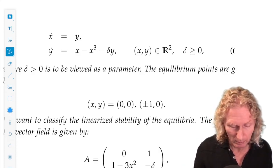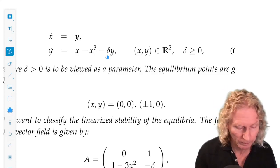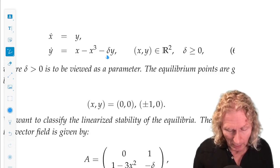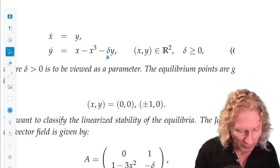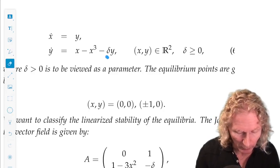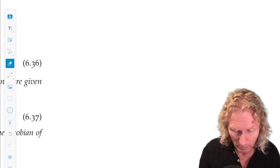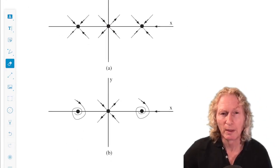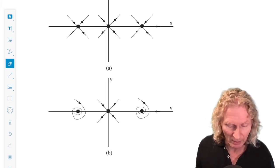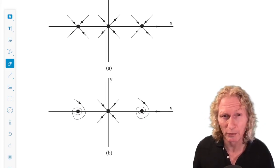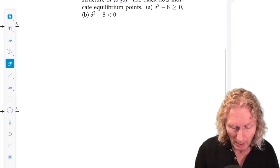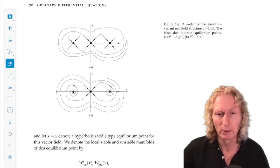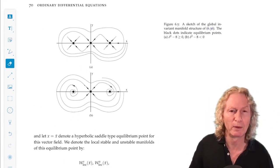The origin was always an equilibrium point. There is a parameter here, δ. For δ > 0, the points ±(1,0) are sinks, but the nature of their linearization was a bit different. This is what the space looked like, the local invariant manifold structure for these three equilibria.